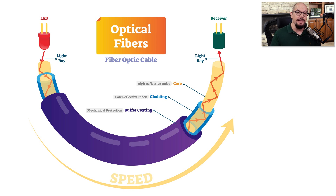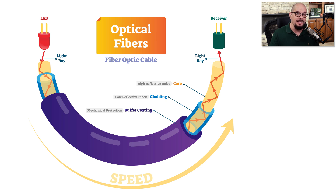This fiber optic cable is made of many different layers. The internal layer is the core of the fiber optic. This is a highly reflective core, which allows light to enter the fiber and bounce around until it makes its way to the other side. Protecting the core is a cladding with a low reflective index, which means if any light leaks out into the cladding, it won't be reflected back into the core. On the outside is a protective coating that is usually colored to designate what type of fiber is on the inside.